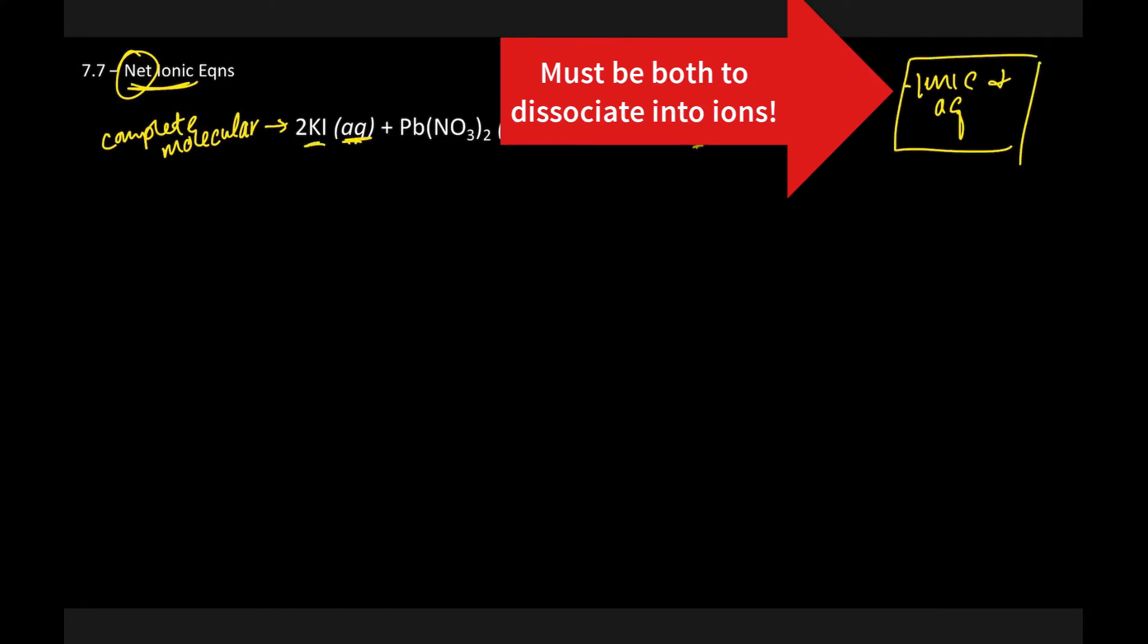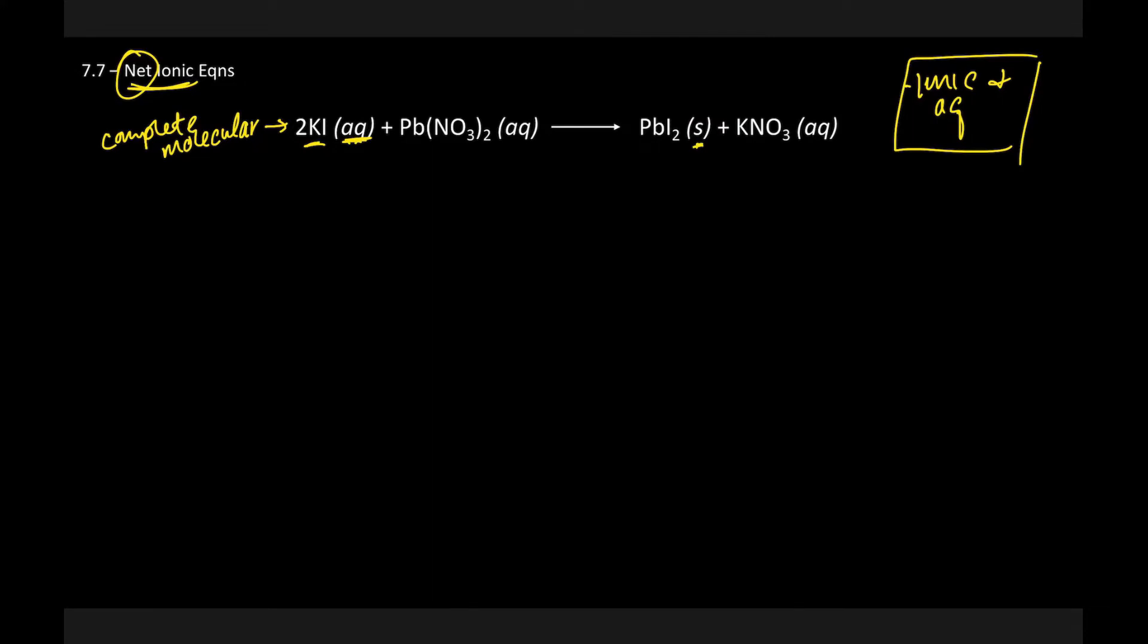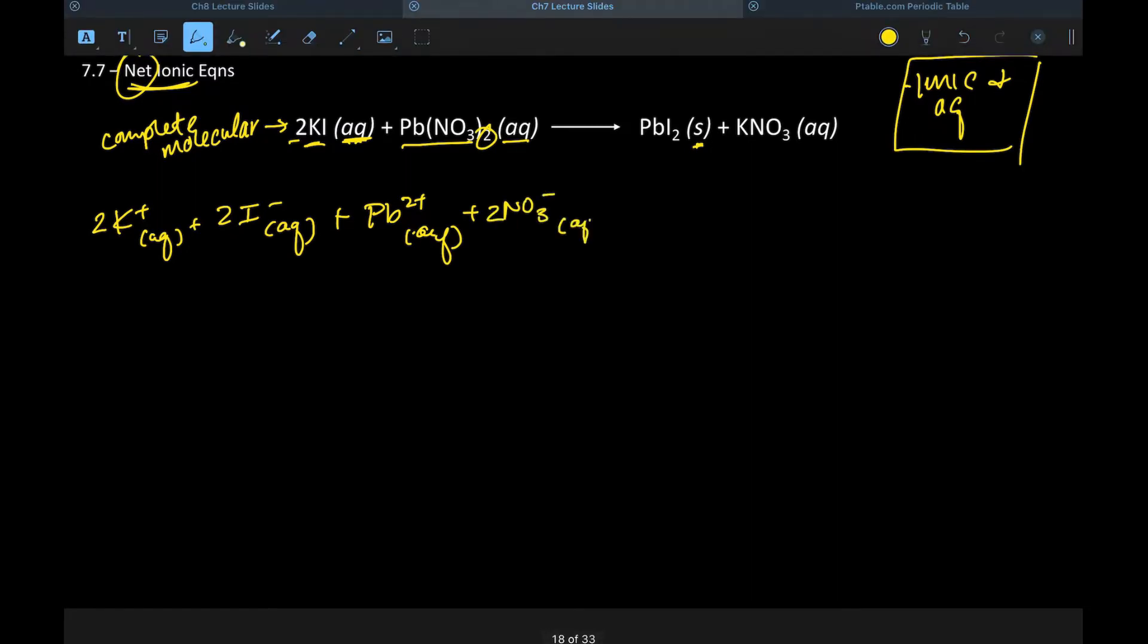So here, ionic, aqueous, we're going to dissociate it. If I have two KIs, what that means is I have two Ks and I have two I's. We also have this, which is ionic, aqueous, so we're going to dissociate that. So I have lead, and again, you could work backwards to figure out the charge based on the fact that there are two of these nitrates. We have two nitrates.